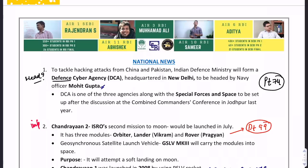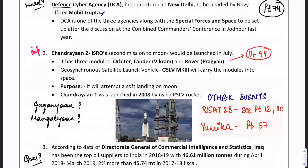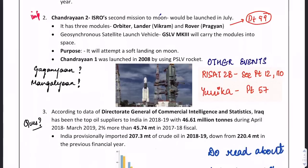Chandrayaan 2 is ISRO's second mission to the Moon. The first was Chandrayaan 1, launched in 2008. Chandrayaan 2 has three modules: Orbiter, Lander, and Rover. The lander is named Vikram and the rover is named Pragyan. We will also discuss other important ISRO missions launched in 2019, including RISAT-2B and Yuvika, which will be covered later in the video.